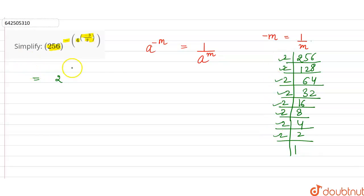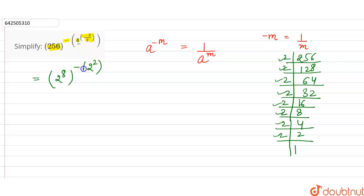So we can write 256 as 2 raised to the power 8. And we can write 4 as 2 raised to the power 2. So the expression becomes 2 raised to the power 2, whole raised to the power minus 3 by 2.